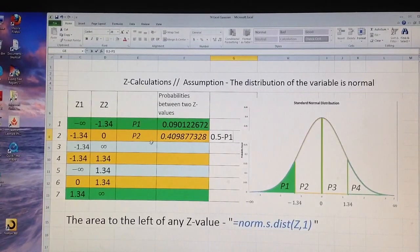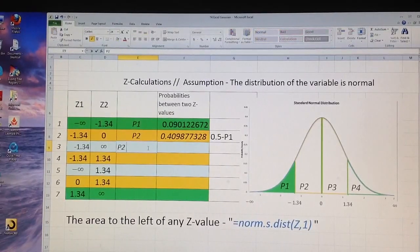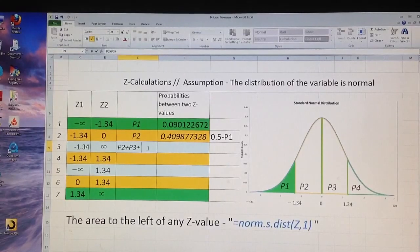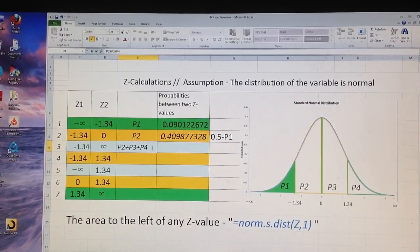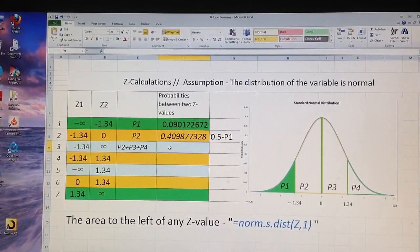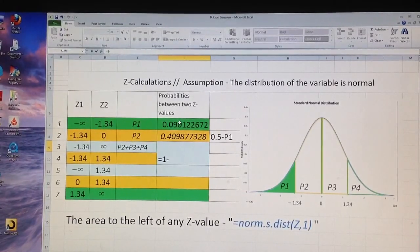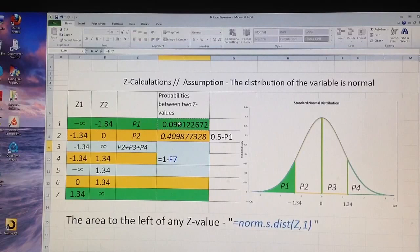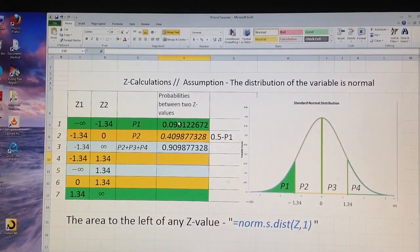The area from negative 1.34 to positive infinity is actually P2 plus P3 plus P4, that white area. And this area actually is equal to 1 minus P1. Only the green area is not in this sum.